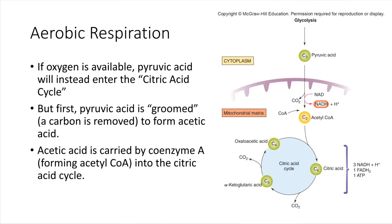Let's switch gears a little bit here and talk about what happens if oxygen is available for the cell. In that case, after glycolysis takes place — remember, glucose gets split into two molecules of pyruvic acid — what happens next is that our NADH molecules are going to get freed up by donating their electrons to the electron transport chain.